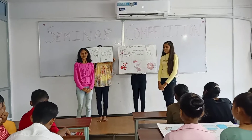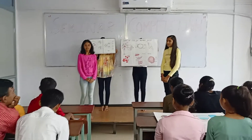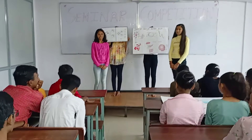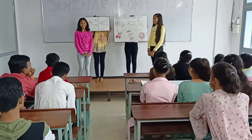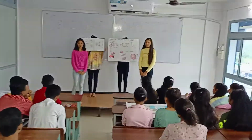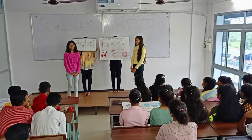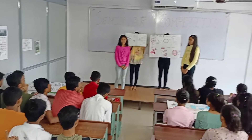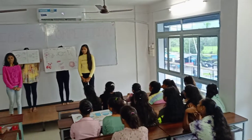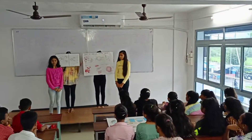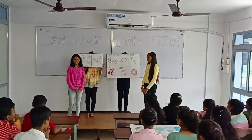Blood cell. Blood cell is a specialized fluid in the body. It has four main components: plasma, red blood cells, white blood cells, and platelets. Blood has many different functions, like transporting oxygen and nutrition to the lungs and tissues.